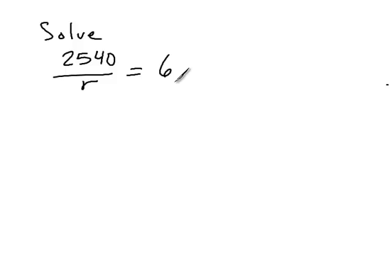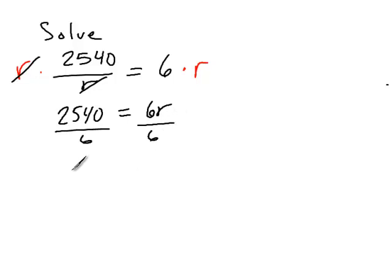So how would we solve this thing? We want to solve for R, and we need to get R off the denominator. So what we do is we multiply both sides by R, right? And that cancels the R out on the left, and so we get 2,540 equals 6R, and then we divide by 6, so R equals, and if we change it to decimal, 423.3 repeated. So 423 and a third.